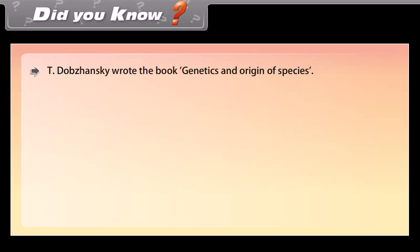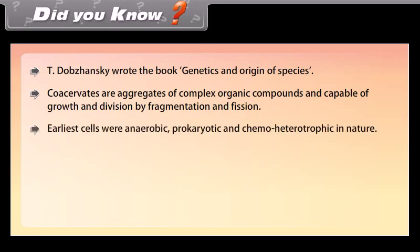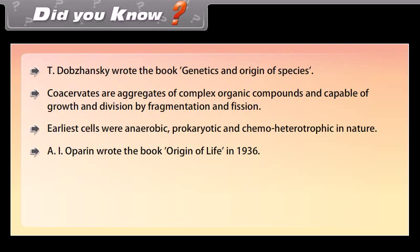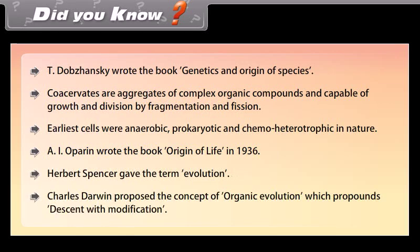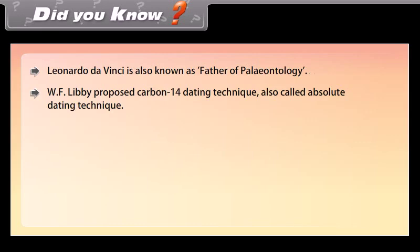T. Dobzhansky wrote the book Genetics and Origin of Species. Coacervates are aggregates of complex organic compounds capable of growth and division by fragmentation and fission. The earliest cells were anaerobic, prokaryotic, and chemo-heterotrophic in nature. A.I. Oparin wrote the book Origin of Life in 1936. Herbert Spencer gave the term 'evolution.' Charles Darwin proposed the concept of organic evolution, which propounds descent with modification. Leonardo da Vinci is also known as the father of paleontology. W.F. Libby proposed the carbon-14 dating technique, also called the absolute dating technique.